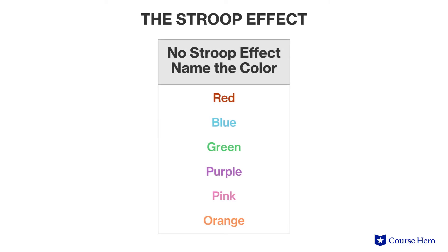A simple demonstration of the implicit and explicit systems is the Stroop effect. In this task, your job is to identify the color of each word on the list. Go ahead and pause and try it. I'll wait.